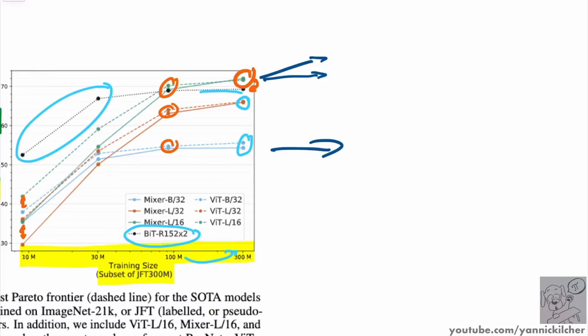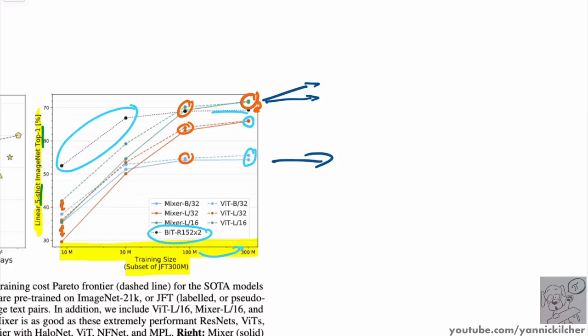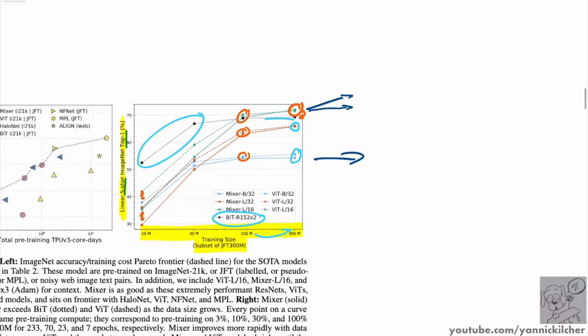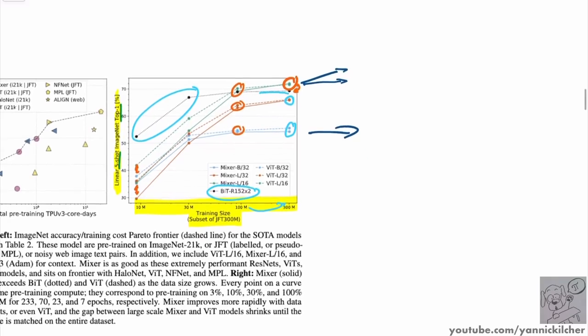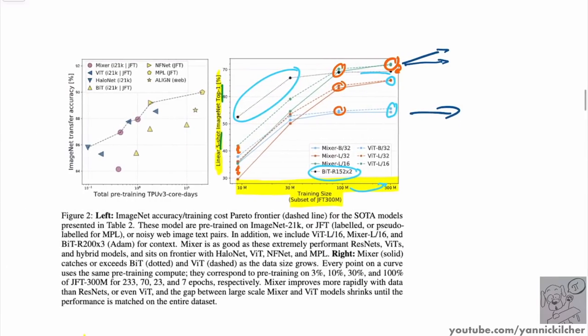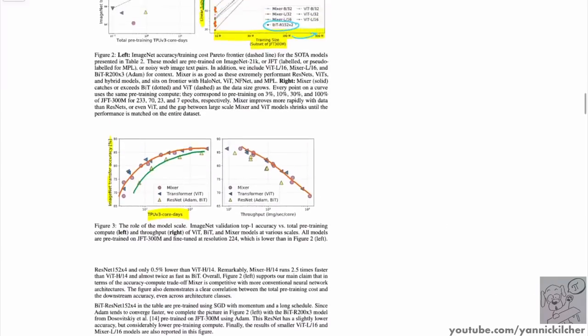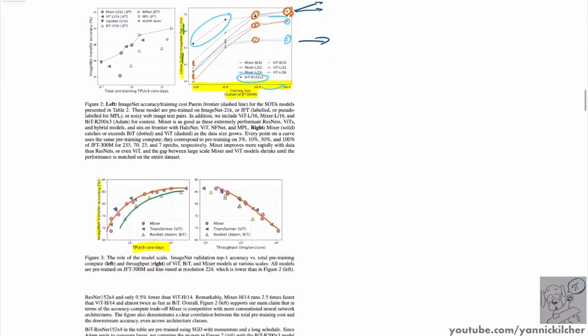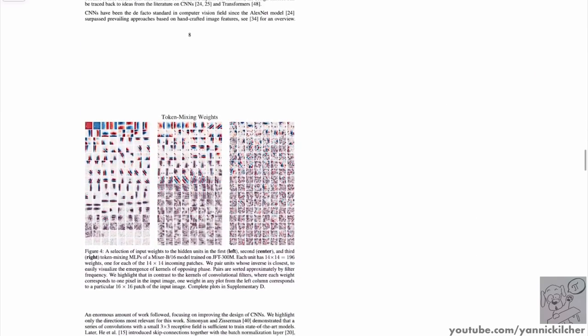It also might be the case that both plateau, in which case that would just mean with enough scale you can get pretty much anything to work. If you're cynical, you can say even a crap architecture like mixer you can get to work by just scaling it up and using SGD, which might also be true. Ultimately, in the limit of scale, as you have the entire possibility of all images as your data set, you can just perform a k-nearest neighbor classification and you'd be correct 100% of the time. I don't think we're there yet with the scale, but the sort of trend is relatively clear. It will be really interesting to see how that goes on after our current limits.